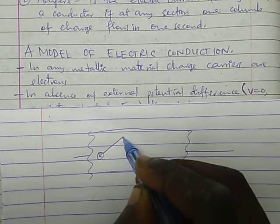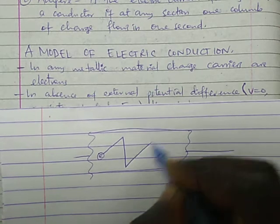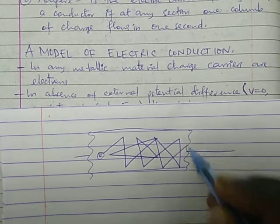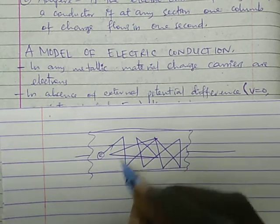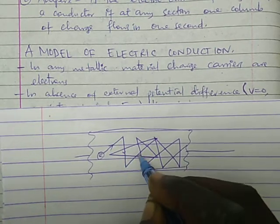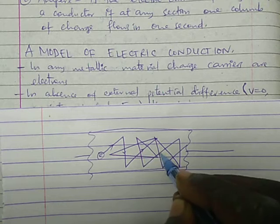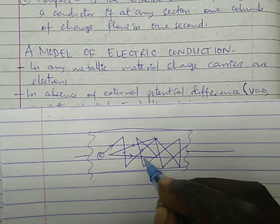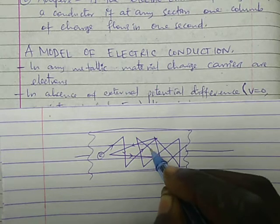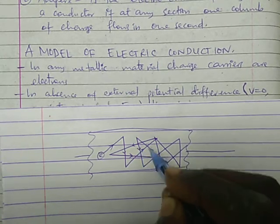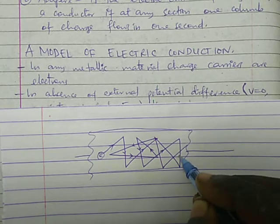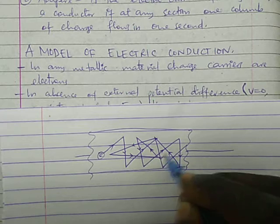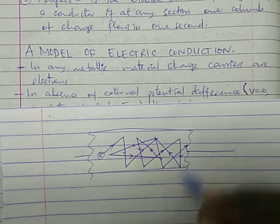The electron can go in different directions — back, forth — exhibiting random motion in different directions. So when there is no applied charge, the electron undergoes this random or lander motion.